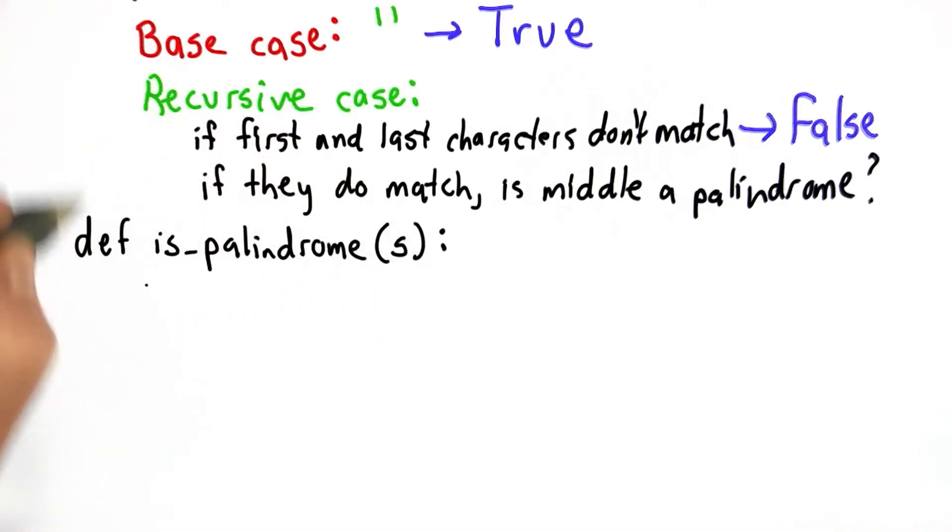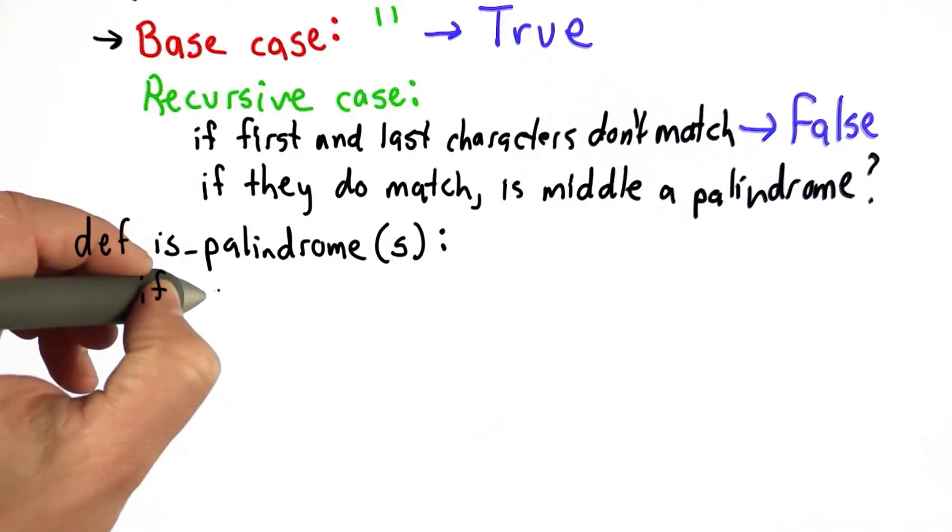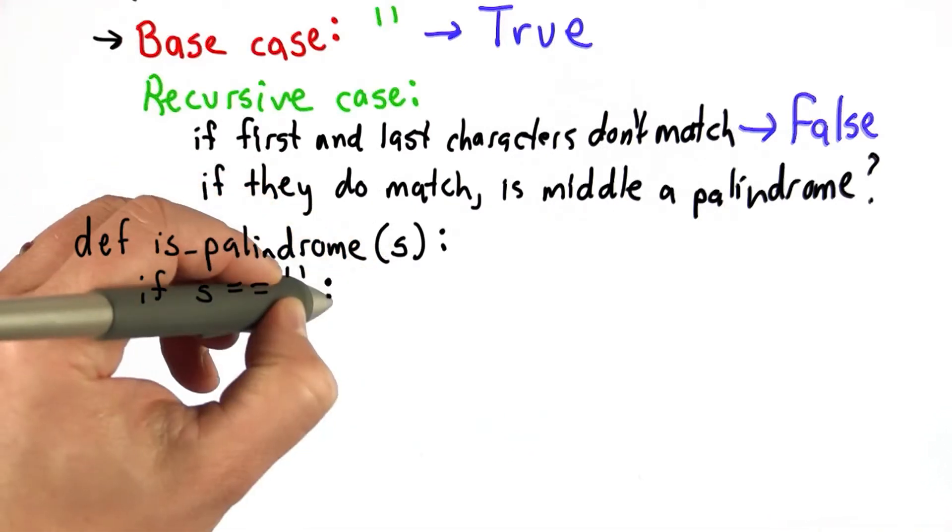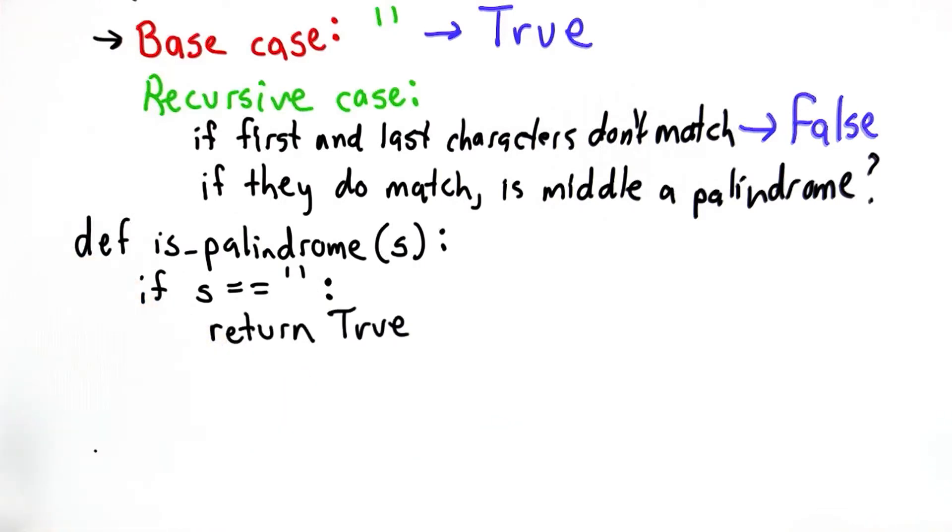We're first going to test the base case. The base case is to see if the string is empty, we should return true right away. We can do that with an if. We're going to check if s is equal to the empty string. And if it is, we return true. That's our base case.